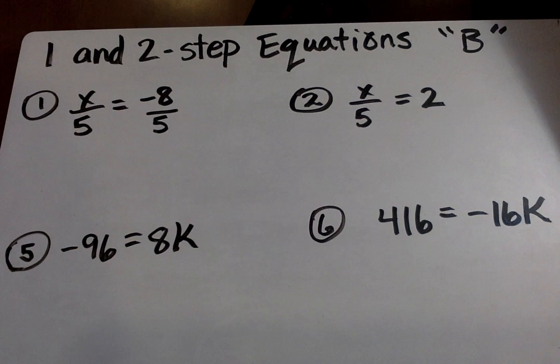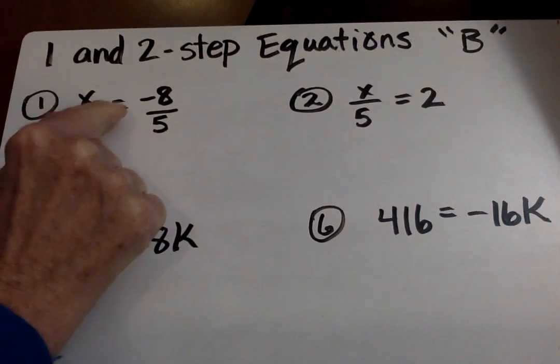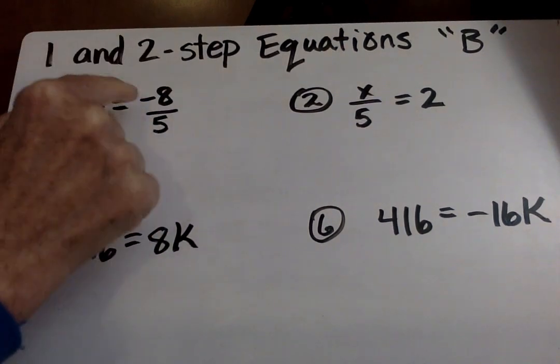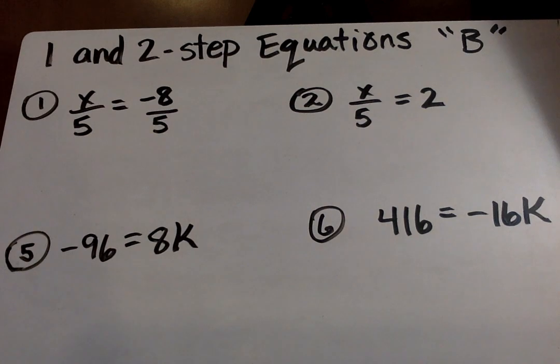X over five equals negative eight over five. Now if you see a negative in the middle, like right there on your paper, I would move it up and make sure it's with the top number or the numerator. We never leave a negative on the bottom.